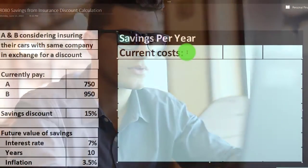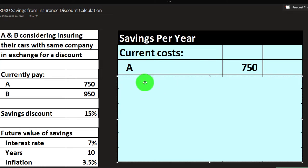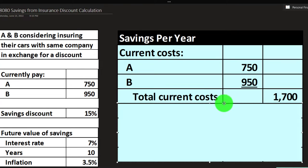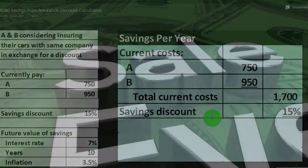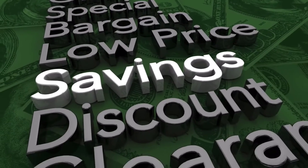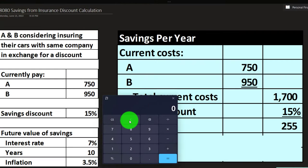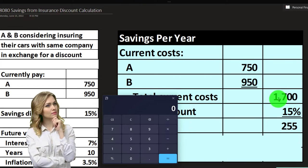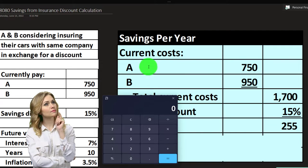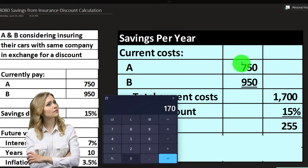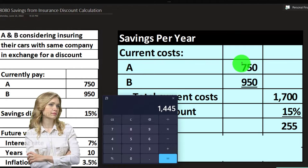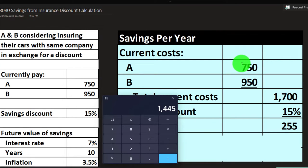Let's first consider the savings calculation. These are great problems to do in Excel because you can practice setting up your Excel tables and putting together your worksheets. We've got the current cost, I'm putting a colon here to indicate it's a subcategory. We currently have A and B, I've indented A and B, 750 for A, 950 for B. The total current costs are going to be $1,700. We're going to assume they'll get a savings discount of 15% and therefore the discount is $255. They're currently paying $1,700, so if they got the discount of $255, we could say $1,700 minus $255 and get to $1,445.